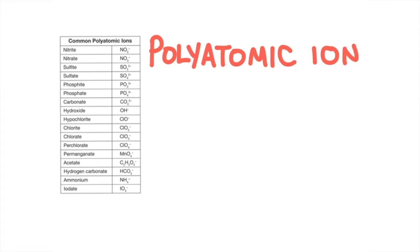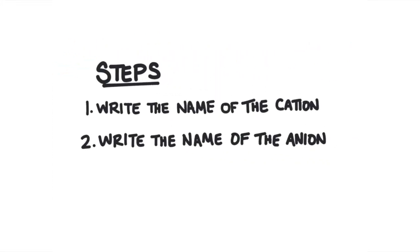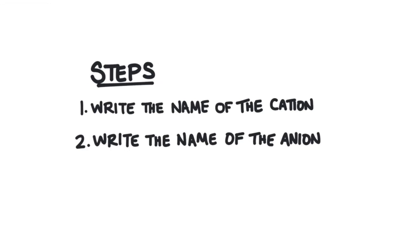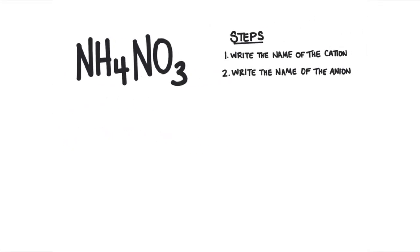The steps for naming compounds with polyatomic ions are almost exactly the same as for binary compounds, but in this case we don't do anything to the name of the anion — we just leave it exactly as written. So we write the name of the cation, then write the name of the anion. Part of the challenge is recognizing which parts are polyatomic ions, so you need to be familiar with the chart. You may have to memorize these for your chemistry class.